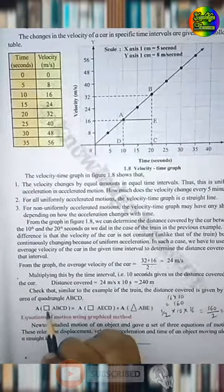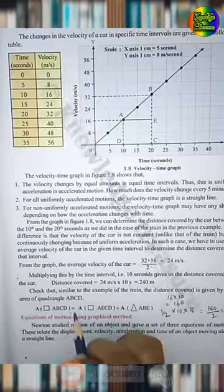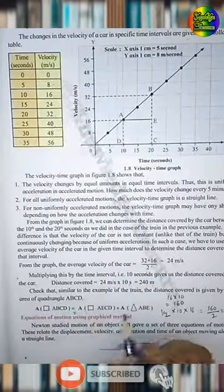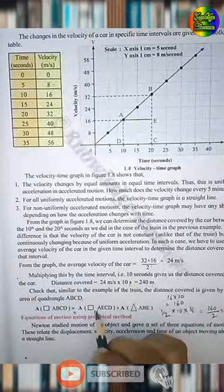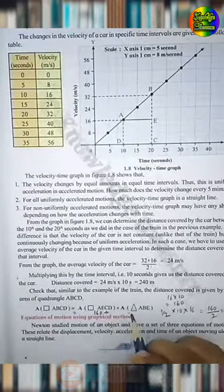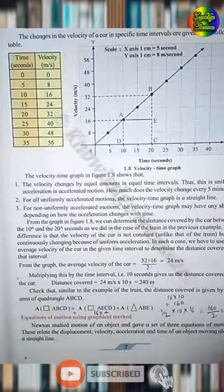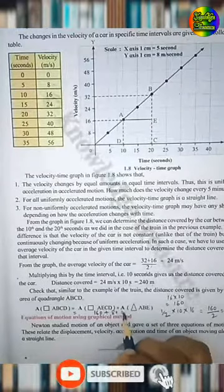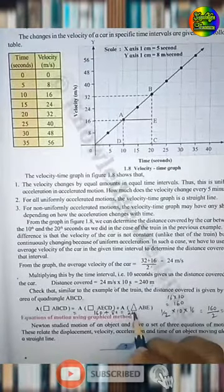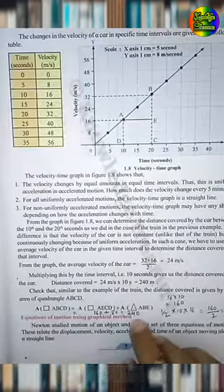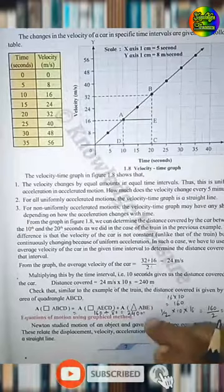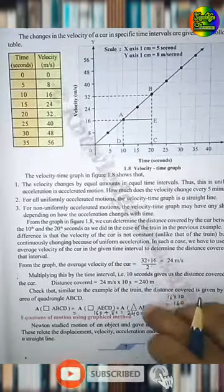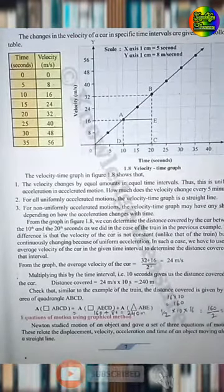Now, area of quadrangle ABCD is equal to area of AECD, that is 160, plus area of triangle ABE, that is 80, equal to 240. So the distance covered is 240 meters. You can see the answer is the same.